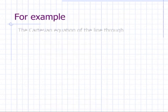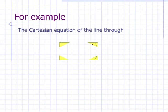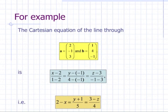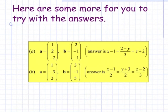For example, the Cartesian equation of a line through the points A = (2, -1, 3) and B = (1, 4, -1) is: (X minus 2) over (1 minus 2) equals (Y minus (-1)) over (4 minus (-1)) equals (Z minus 3) over (-1 minus 3). Here are some more for you to try with the answers on the right.